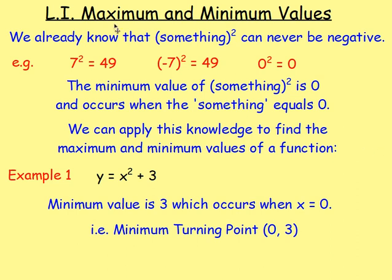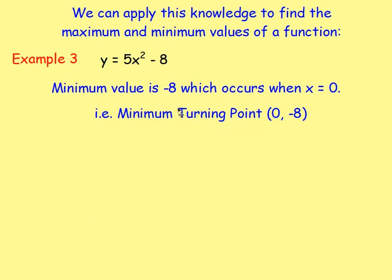Maximum and minimum values: we already know that something squared can never be negative. So if you're asked for the minimum value of y equals x squared plus 3, the smallest possible value of something squared is zero. Add on three, so the minimum value is three. There is no maximum since x can go to infinity. For y equals 5x² minus 8, the minimum of the squared part is zero; multiply by five it's still zero; subtract eight, so the minimum is -8, occurring when x equals zero — giving turning point (0, -8).